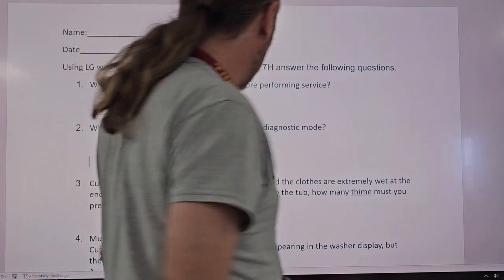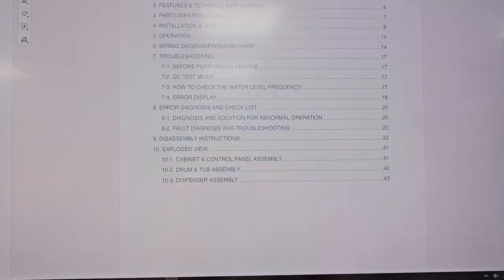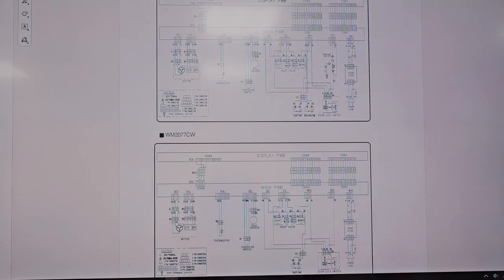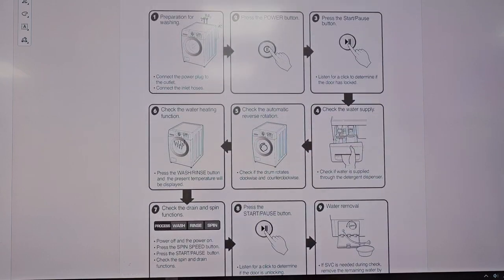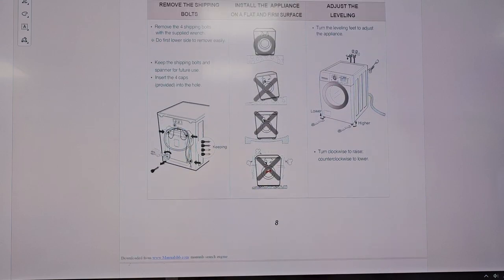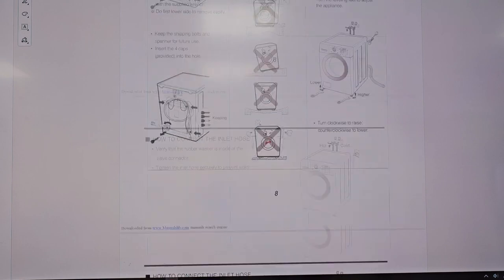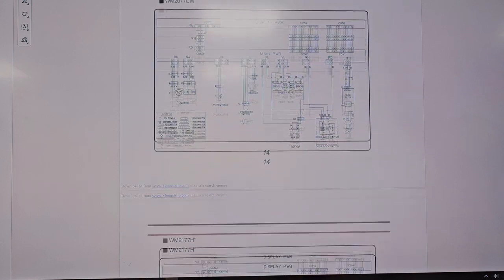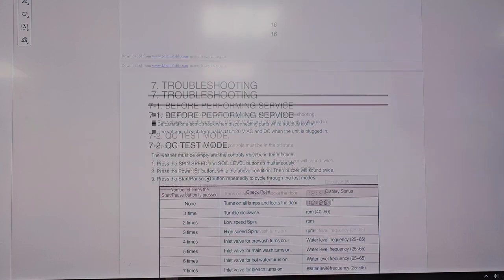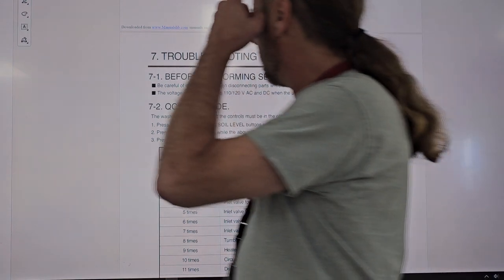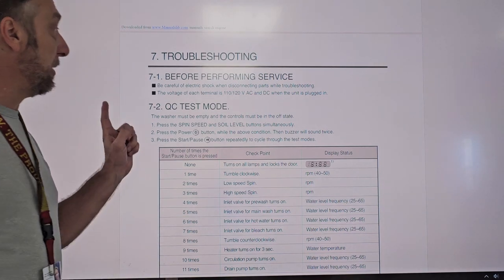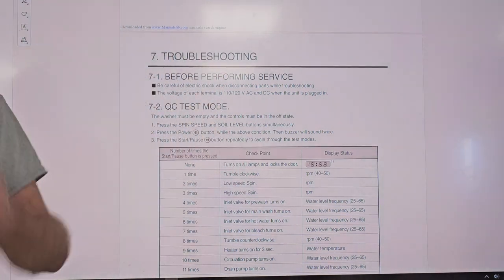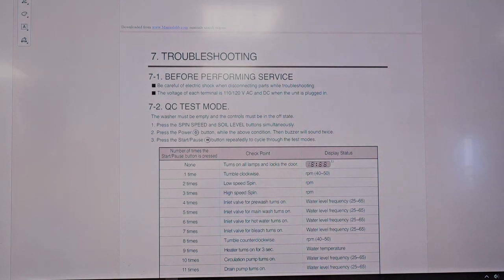What two things in 7.1 should be done before performing service? Let's go to 7.1. Before performing service, be careful electric shock and disconnecting parts while troubleshooting the voltage of each terminal. 110, 120 volts AC and DC when the unit's plugged in. So just going over safety, that's the only reason why I brought that one question out.